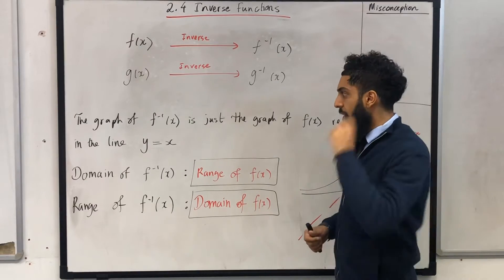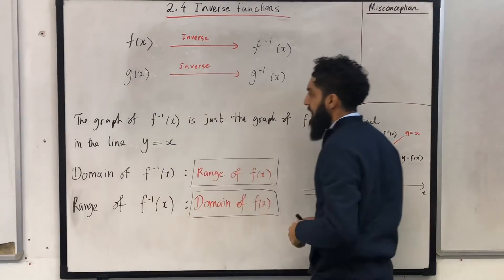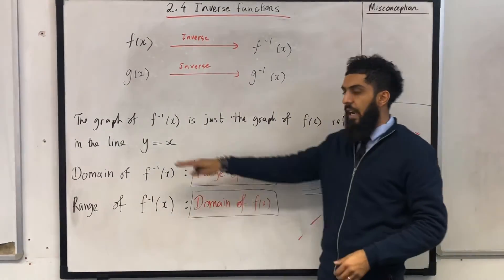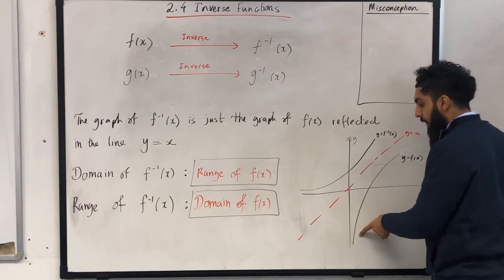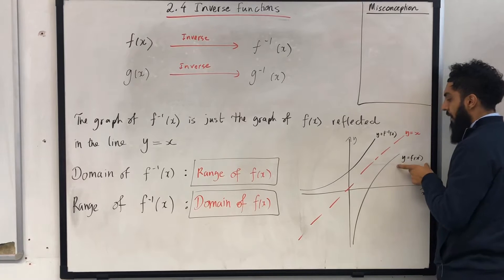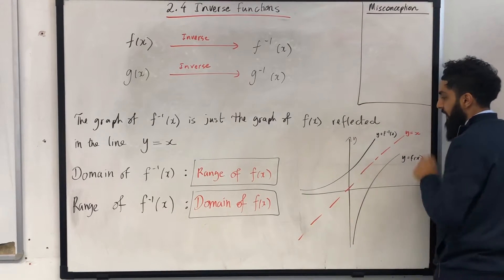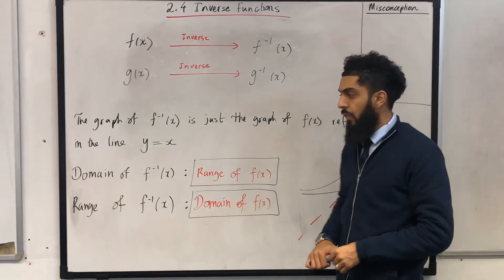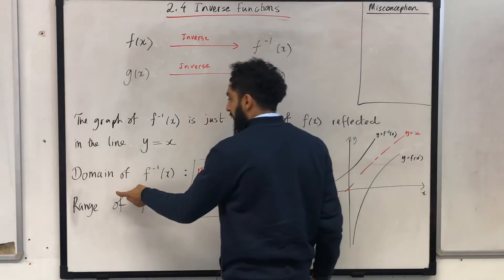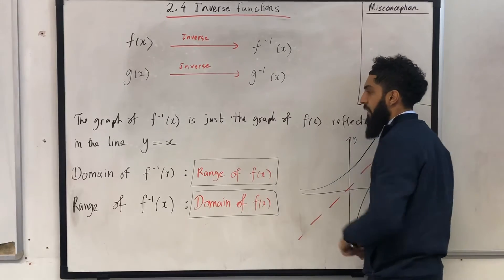Key facts about the inverse function. First of all, the graph of the inverse function of f of x is just the graph of f of x reflected in the line y equals x. I've got the graph y equals f of x — the inverse function of f of x is just f of x reflected in the line y equals x, and here is the graph of the inverse function of f of x. Another key fact is that the domain of the inverse function of f of x is just the range of the function f of x.